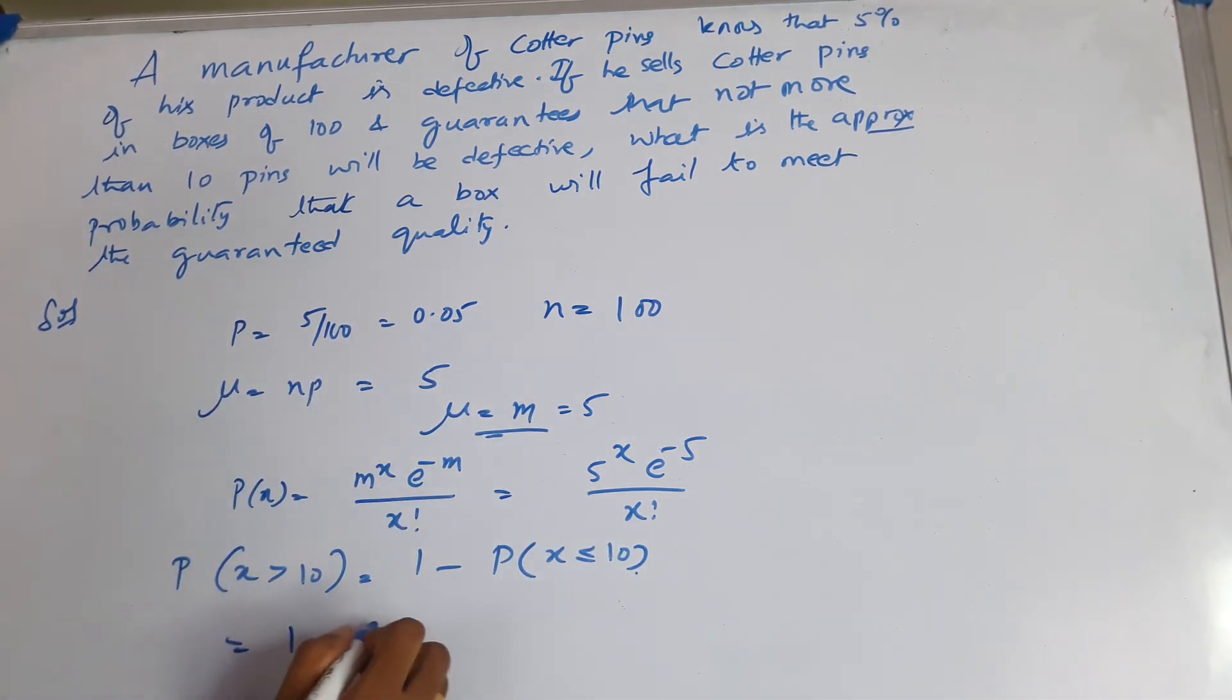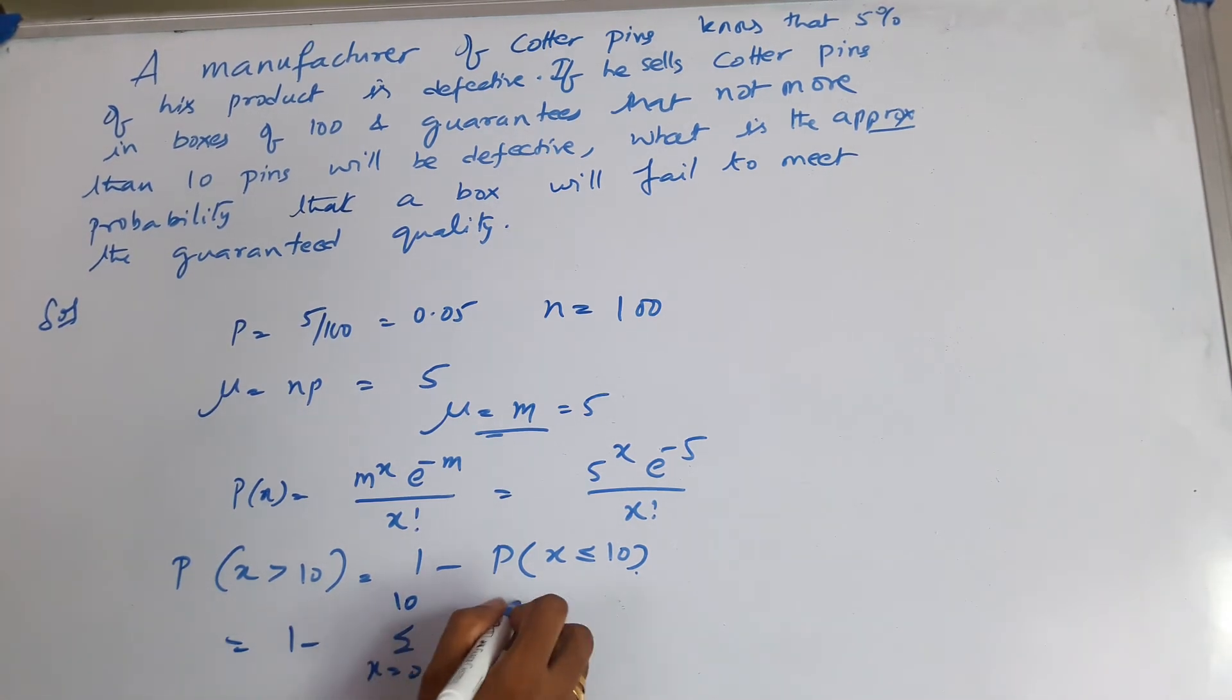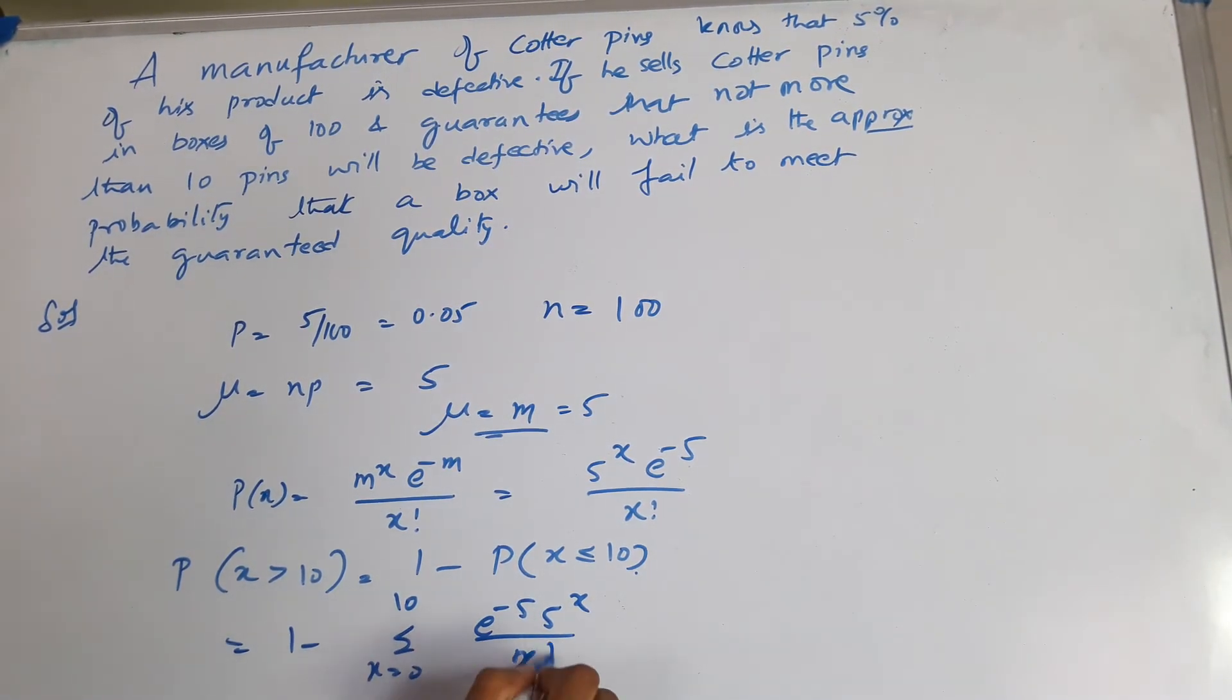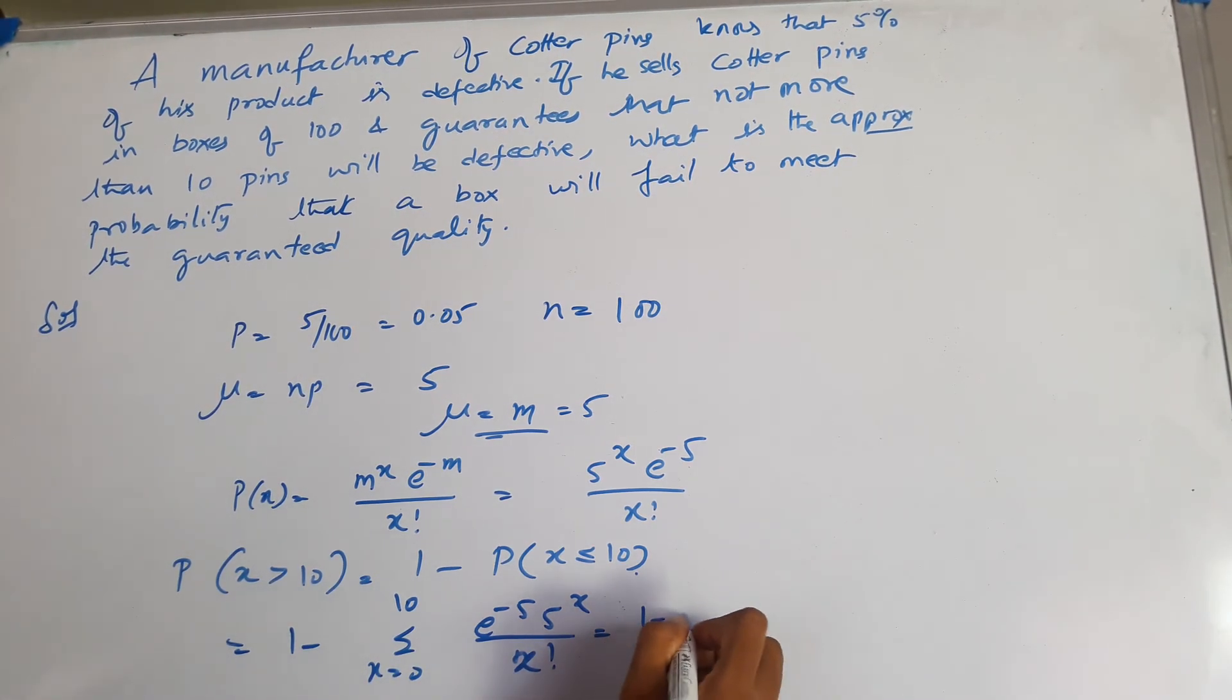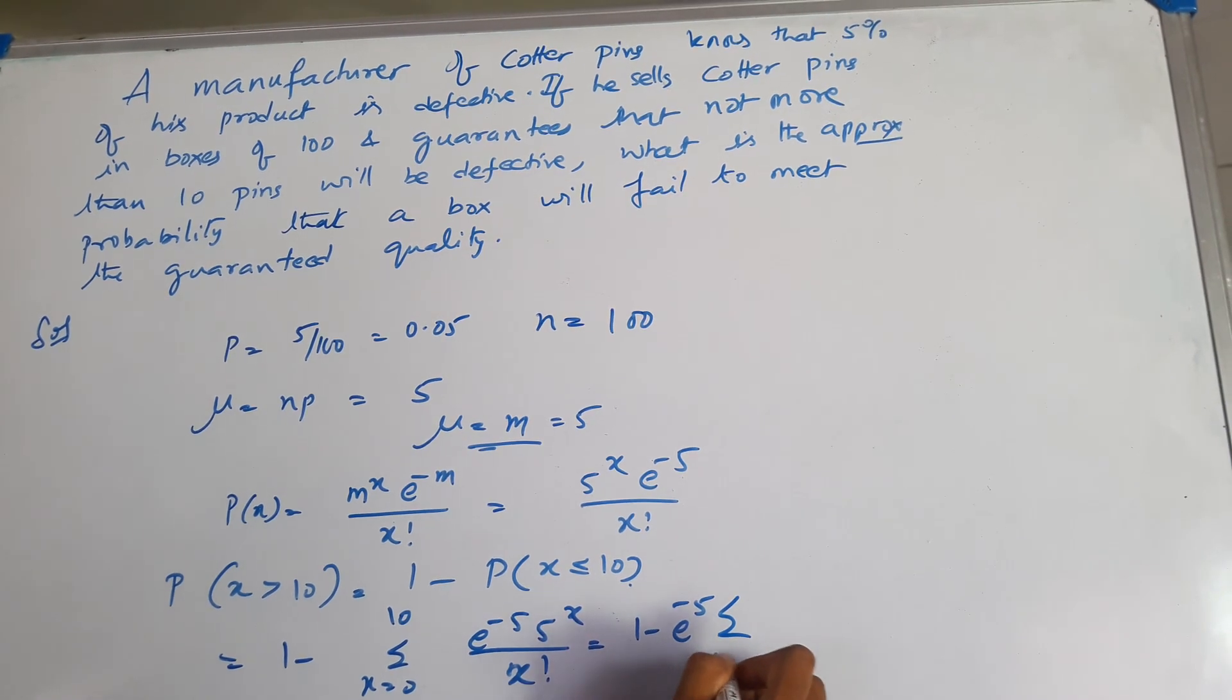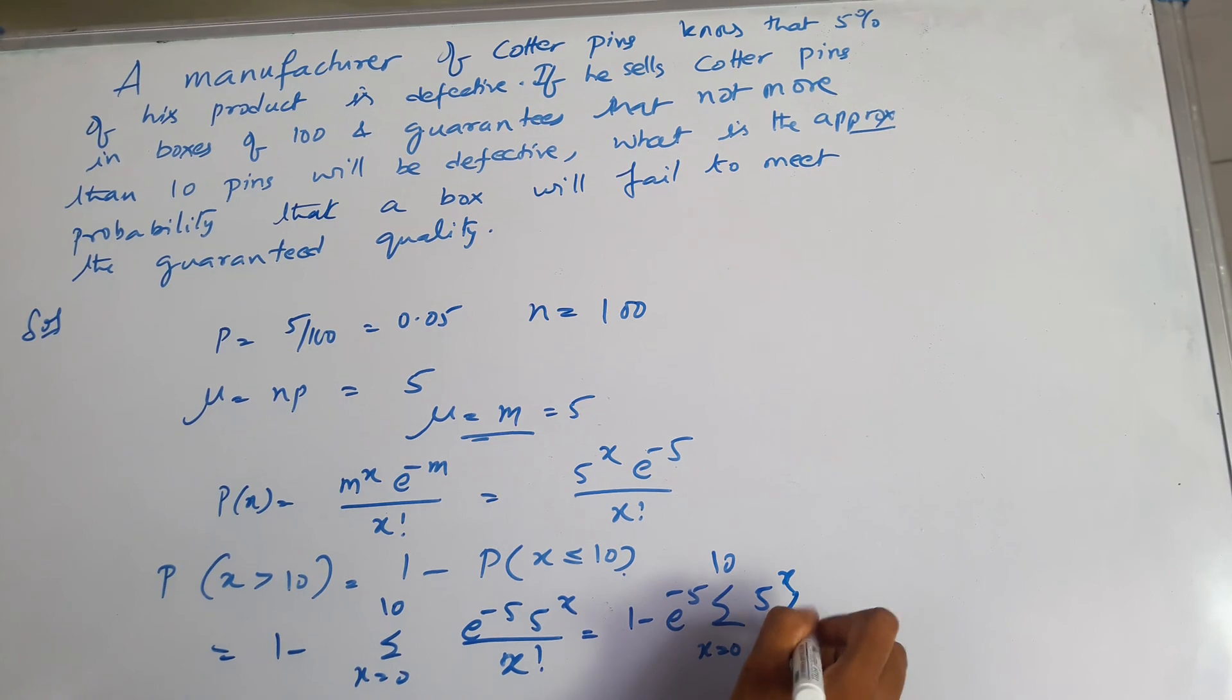When you compute this, you get summation X equals 0 to 10 of e to the power of minus 5 times 5 to the power X divided by X factorial. This is 1 minus e to the power of minus 5 times summation X equals 0 to 10 of 5 to the power X divided by X factorial.